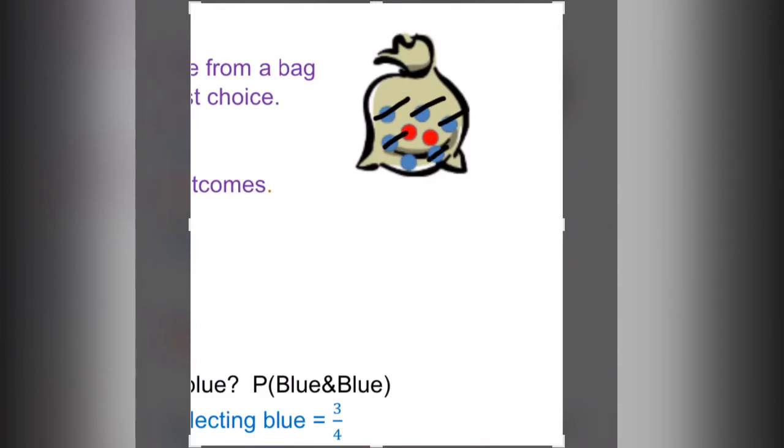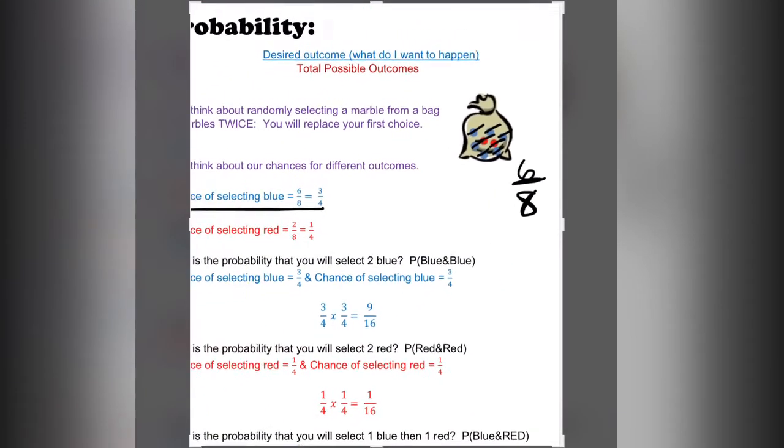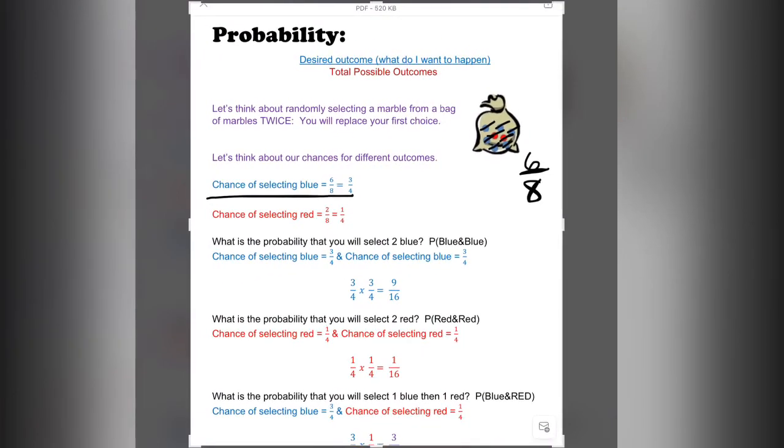What's the probability of getting blue and blue? First, I need to figure out the probability of getting blue. There are 6 blue out of 8 total. The chance of selecting blue is 6 out of 8, but in simplest form, 3 out of 4.